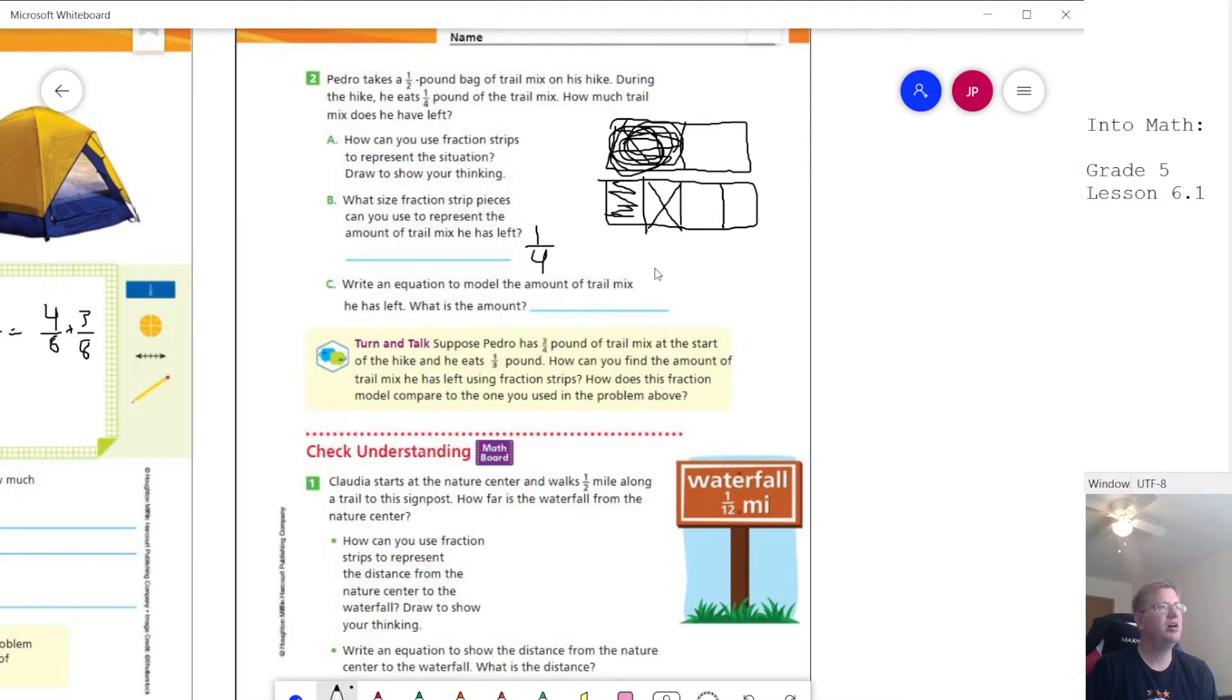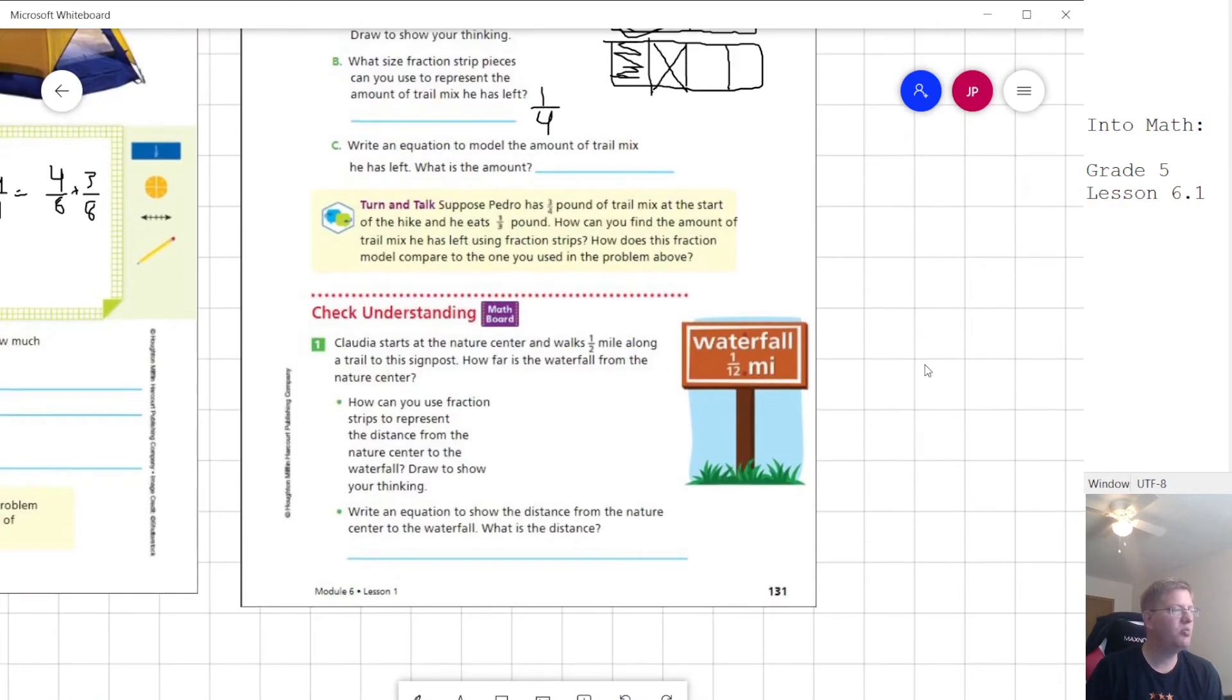So we can use fourths to show the amount that he has left. And then we could do one half minus one fourth equals one fourth. So those are a couple examples to show some of the things that we've worked on. I'm going to do one more problem.